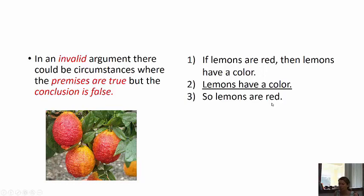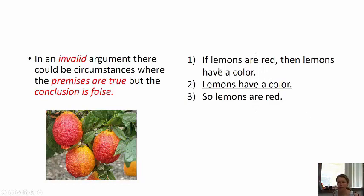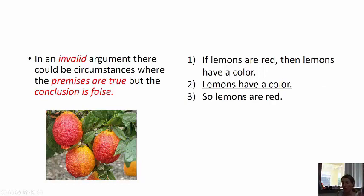Is there a way for the premises to be true but the conclusion false? If lemons are red, then lemons have a color — that's tautologically true. Lemons have a color — true. So lemons are red? Can we make premises one and two true but conclusion three false? Yes — lemons are yellow, or purple, or blue. Any color other than red makes the premises true but the conclusion false. So this argument is invalid. This is the counter example method in action.